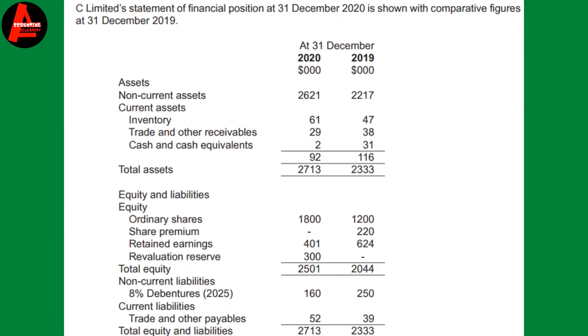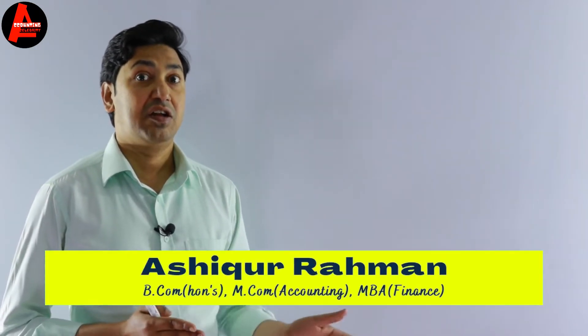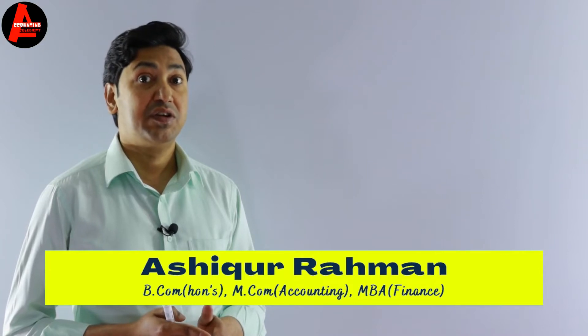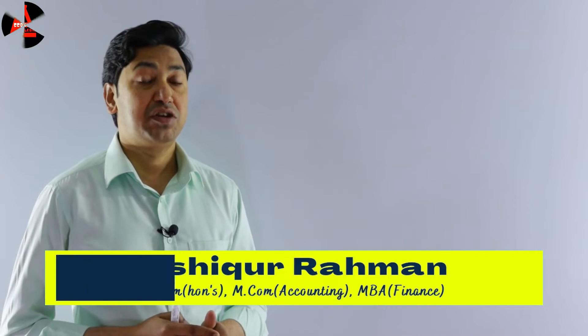C Limited's statement of financial position at 31st December 2020 is shown with the comparative figures at 31st December 2019. So here you see in the question a comparative balance sheet — that is, a statement of financial position — is given. On the left side, the column is for 2020, and on the right side we have information for 2019. Two years' information is given here side by side.